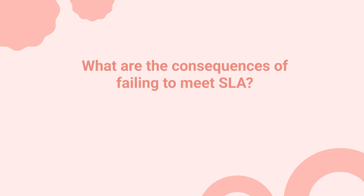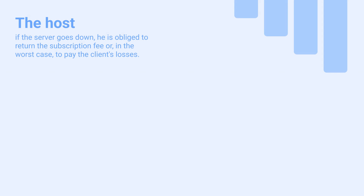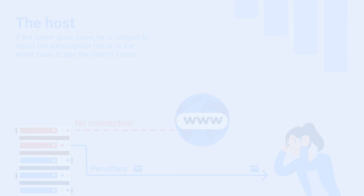What are the consequences of failing to meet SLA? SLAs include service credits — penalties imposed when vendors fall below minimum performance requirements. Examples of penalties: the host, if the server goes down, is obliged to return the subscription fee or, in the worst case, pay the client's losses. The provider will not receive payment because it will be transferred to the following days if there is no channel at that time.